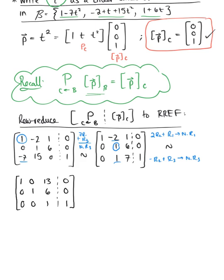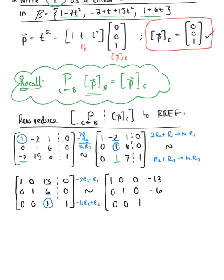Moving to the third pivot position, we eliminate the entries above it. We do minus 13 times row 3 plus row 1, and minus 6 times row 3 plus row 2. This produces the row reduced echelon form: [1, 0, 0 | -13; 0, 1, 0 | -6; 0, 0, 1 | 1]. So the coordinates of vector p relative to basis B are [-13, -6, 1].